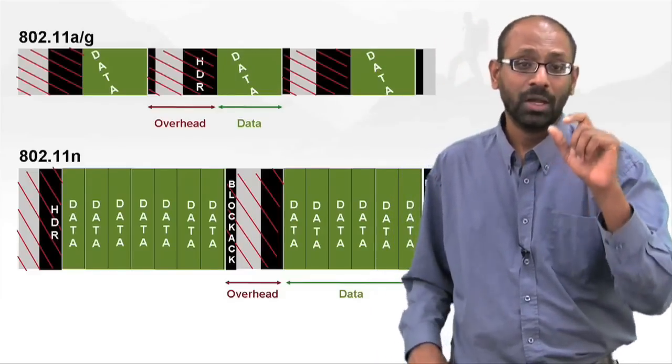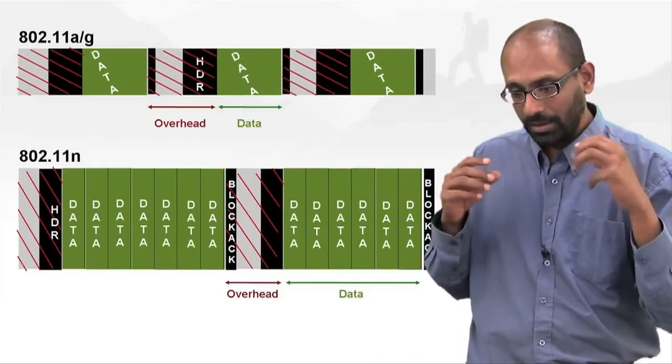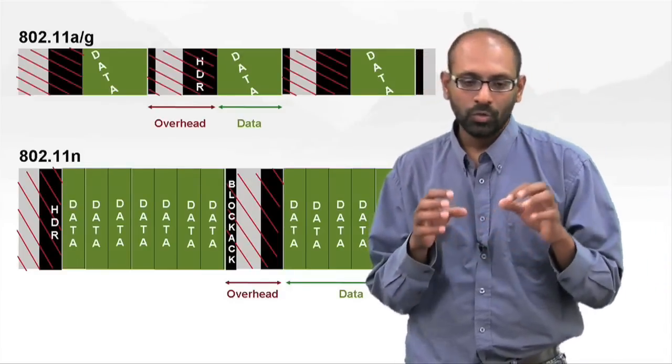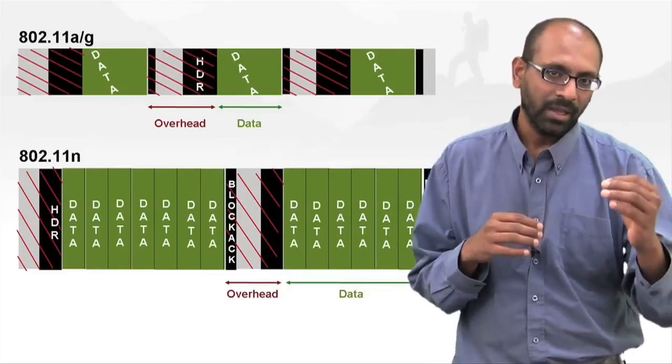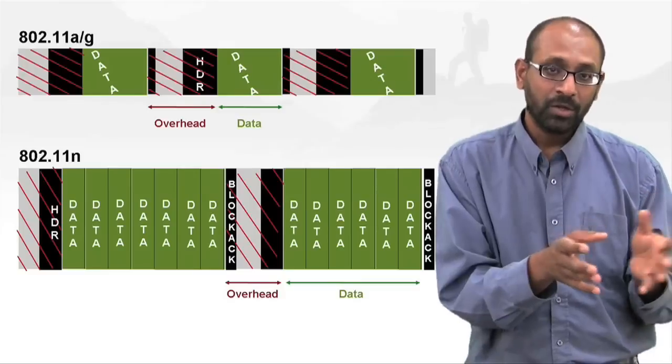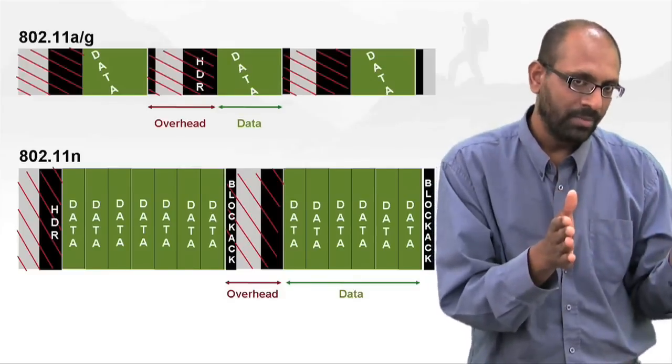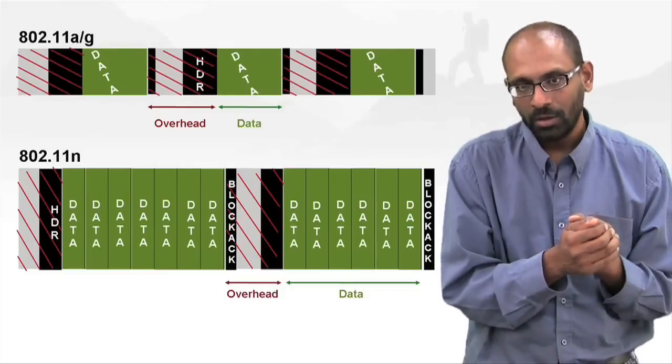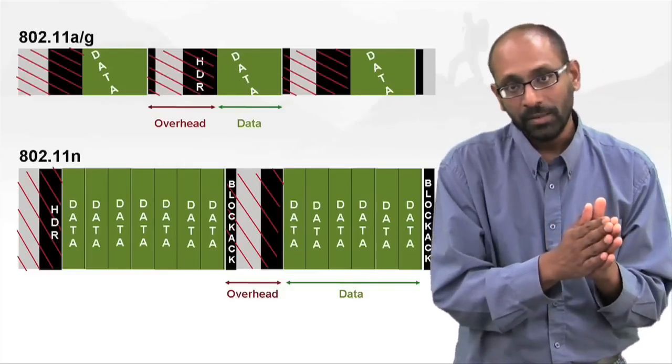By the way, that also allows the 802.11n, a well-designed 802.11n system, to make the contention parameters higher so that you minimize loss. Because even though you might waste a little bit more time in the contention phase, just because you make all the devices wait longer, when they do get access to the channel, they send a burst.